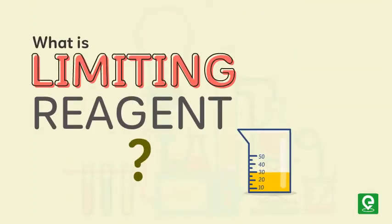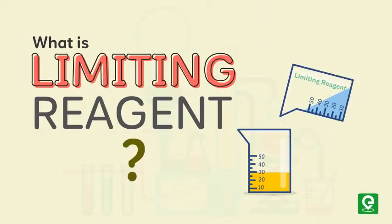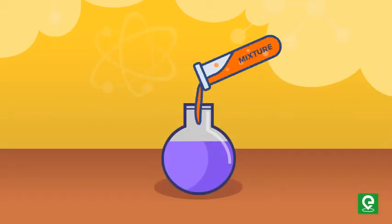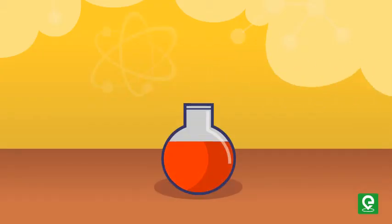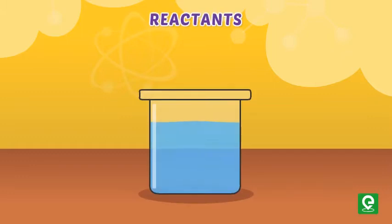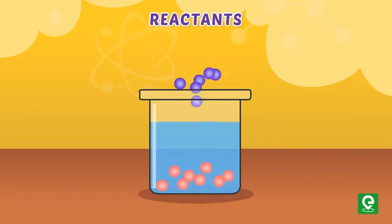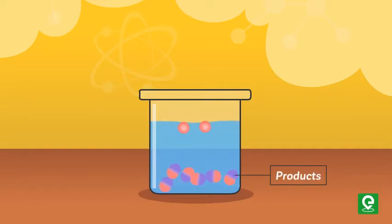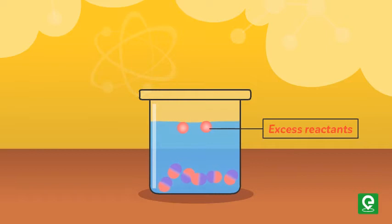What is a limiting reagent? Theoretical chemical equations specify precise amounts of reactants that will combine to give precise amounts of products. However, in a real chemical reaction, arbitrary amounts of reactants are mixed together and allowed to form products, which means that generally one of the reactants will be used up completely while excess amounts of other reactants remain.